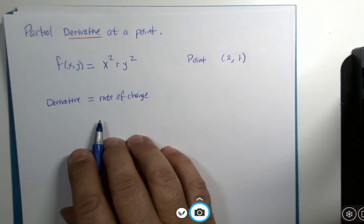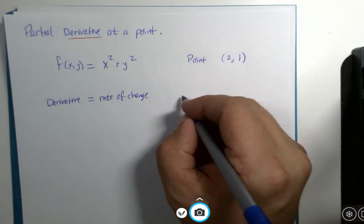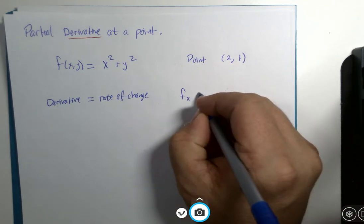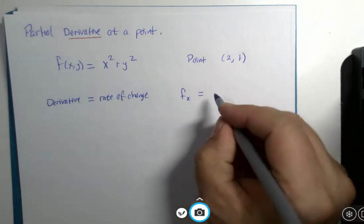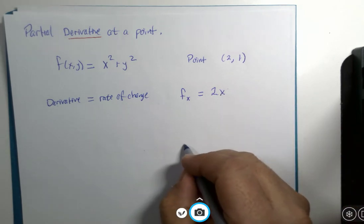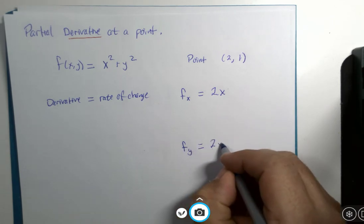So, if we realize that we have two different partial derivatives here, we can calculate the partial with respect to x. And in this case, it's really quite simple. It's 2x. And we could also calculate the partial with respect to y. And that would be equal to 2y.